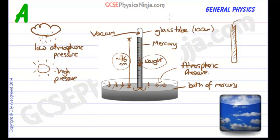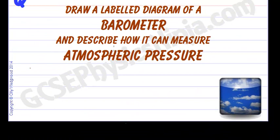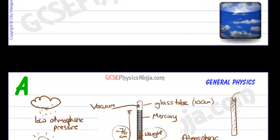So this is the labelled diagram of the barometer. And the flashcard has asked us to describe how it can measure atmospheric pressure.